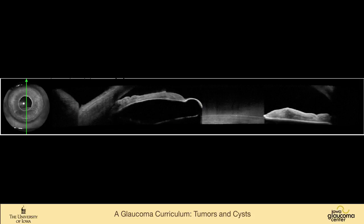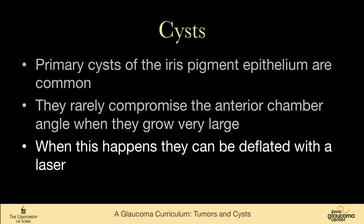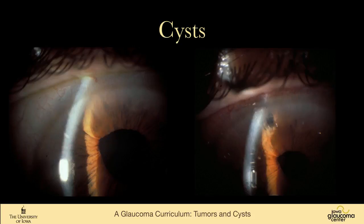Anterior segment OCT shows this mass is just a fluid-filled cyst. They rarely compromise the anterior chamber angle when very large, but if they do, they can be deflated with a laser. Here is someone whose iris pigment epithelial cyst had grown large enough to cause a very narrow angle, and on the right you can see the appearance after laser iridotomy through and into the cyst — something I've almost never had to do.